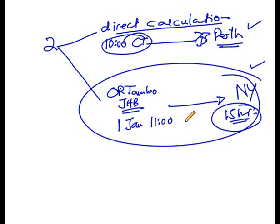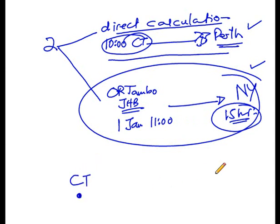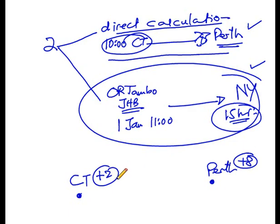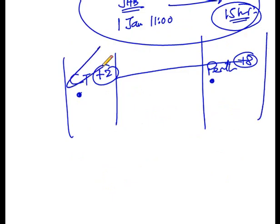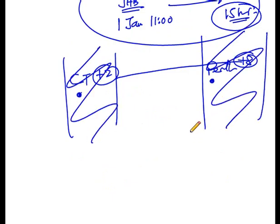Another very important thing you need to know is how to calculate the time zone difference. Time zone difference is very important. Let's take the first type of calculation where you have to calculate the difference in time between Cape Town and Perth. We know Cape Town is plus two and Perth is plus eight. So what is the time zone difference between these two time zones?